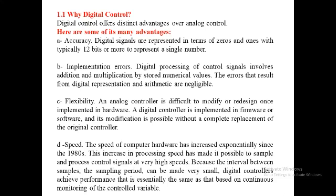The next advantage is speed. For the processing and operation of a control system, we need a high-speed data orientation system. In case of the digital control system, we need high-speed data orientation programming — execution of any program or system must be high. The speed of computer hardware has increased exponentially since 1980, and this increase in processing speed has made it possible to sample and process control signals at very high speed, because the interval between the samples and the sampling periods can be made very small. This digital controller achieves performance that is essentially the same as that based on continuous monitoring of the control variable.